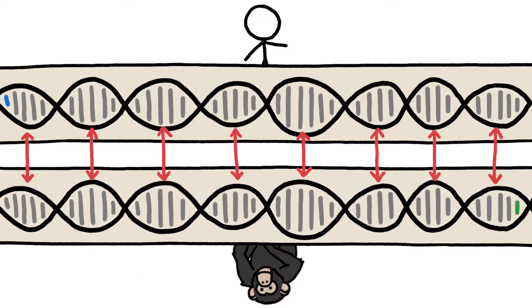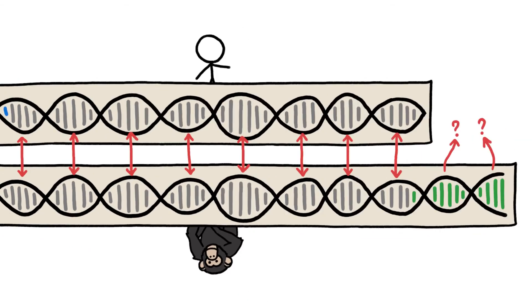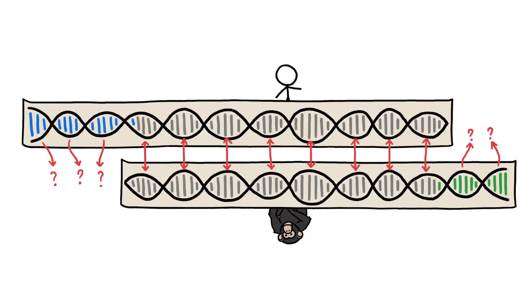So yes, we share 99% of our DNA with chimps if we ignore 18% of their genome and 25% of ours.